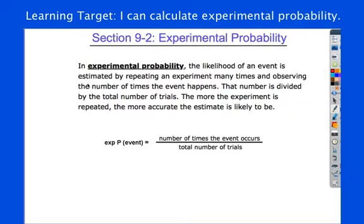You already have this definition written down, and I want you to highlight a couple things here. First of all, experimental probability is how likely an event is to happen by repeating an experiment many times, and observing how many times that thing happens.